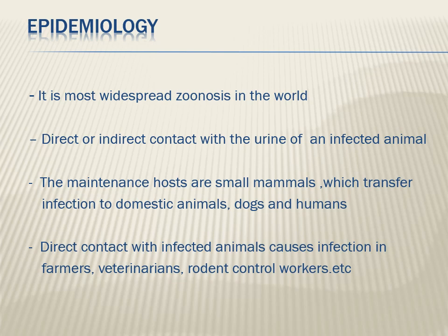Leptospira is further classified into serogroups and serovars based on lipopolysaccharides. Leptospira interrogans has 26 serogroups, which are further divided into approximately 300 serovars. Different serovars and serogroups are present in different geographical areas. Leptospira biflexa also has multiple serovars and serogroups.